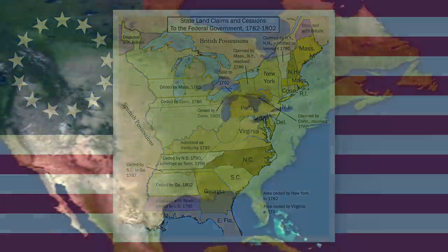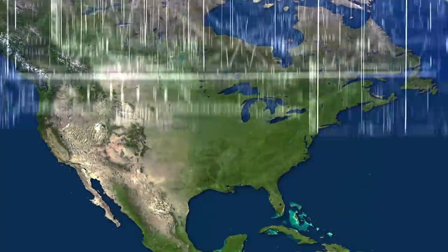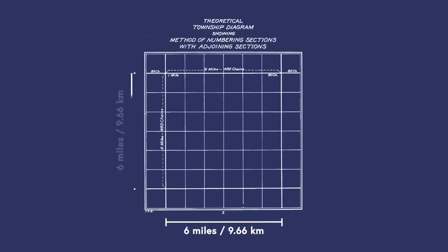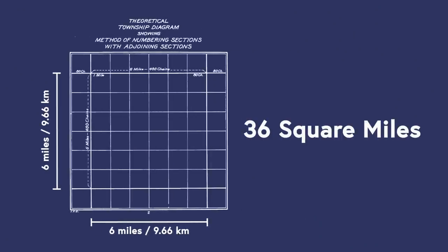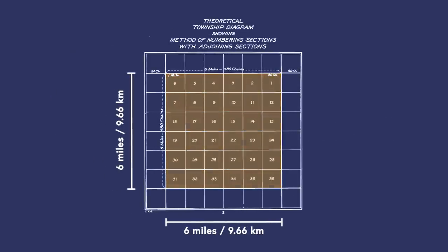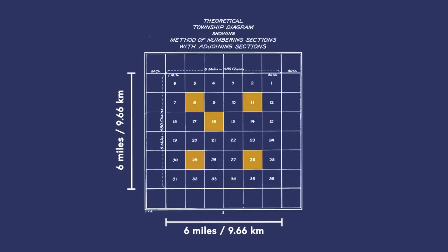Most of the US is divided into thousands upon thousands of townships. Townships are 6 miles by 6 miles and therefore 36 square miles. Each of these square miles is a section and the 36 sections are numbered 1 to 36. For the most part, the US sold these sections off to settlers, with the exception of sections 8, 11, 16, 26, and 29.